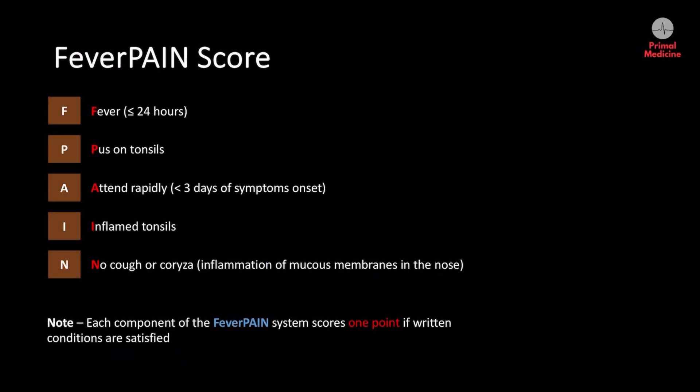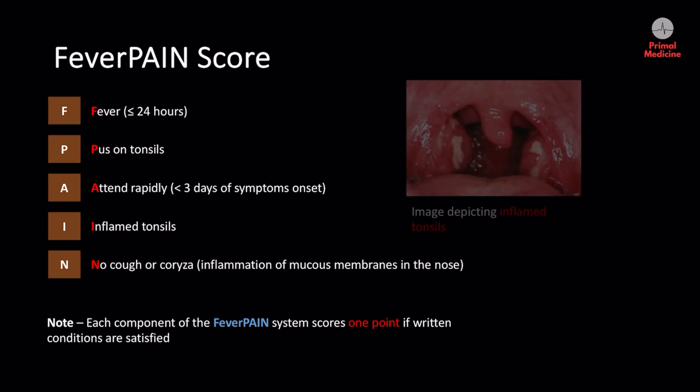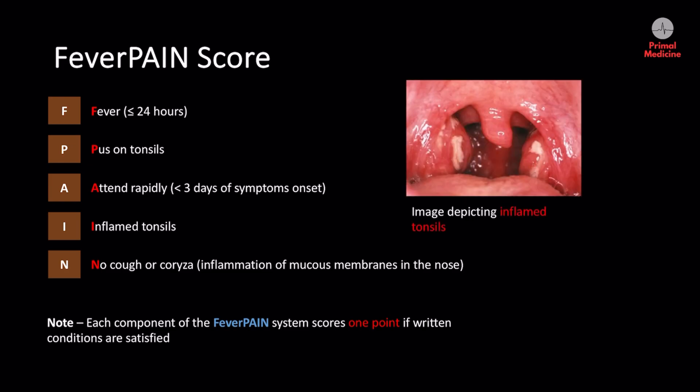We can also use the FeverPAIN score to determine the probability of bacterial tonsillitis. This is split into five parts, each scoring one point, giving a total of five points. Like the Centor criteria, the higher the score the more likely we are dealing with bacterial tonsillitis. The parts include: a fever within the past 24 hours, the presence of pus on the tonsils, the patient attending within three days of symptoms starting, the appearance of severely inflamed tonsils, and finally the absence of cough or other corysal symptoms, which would be more in keeping with viral tonsillitis.